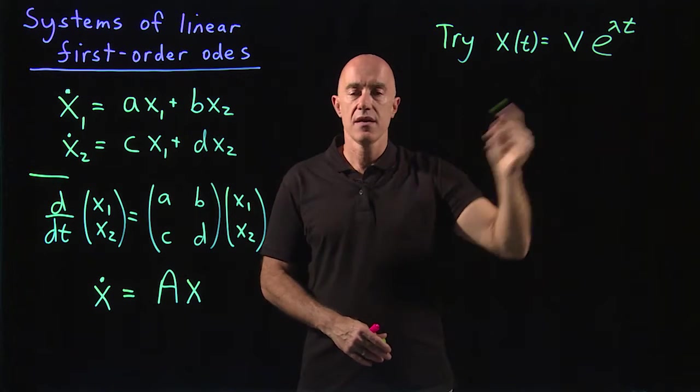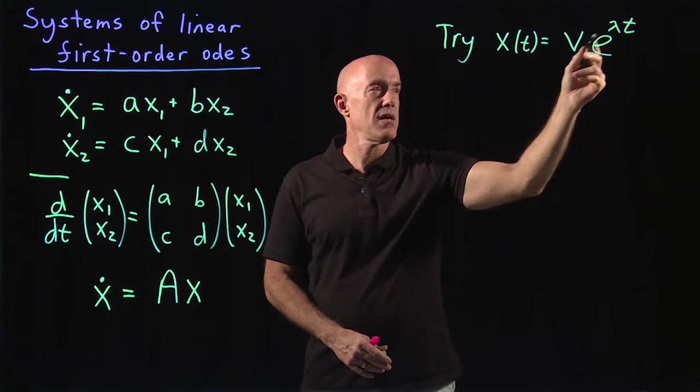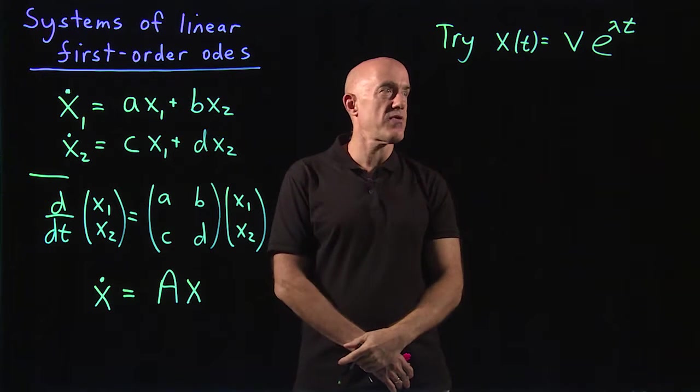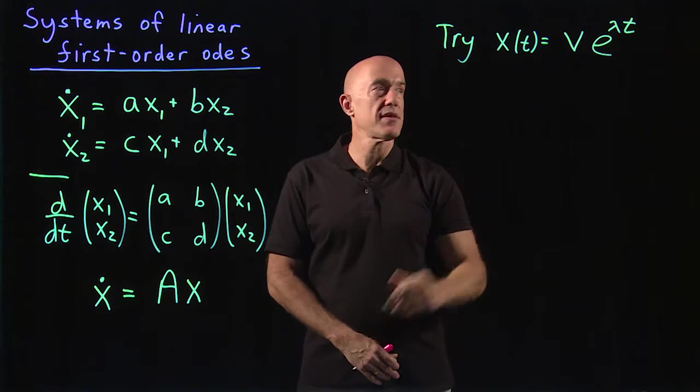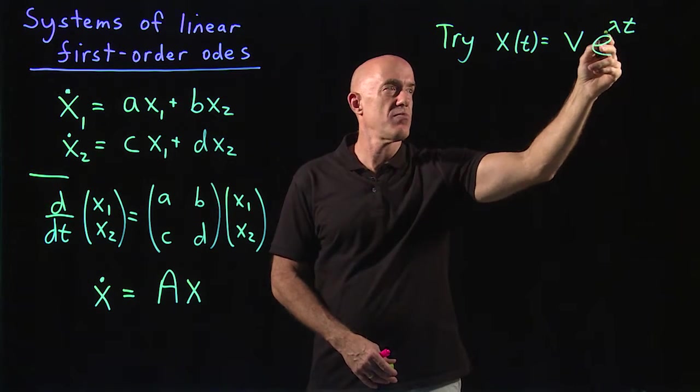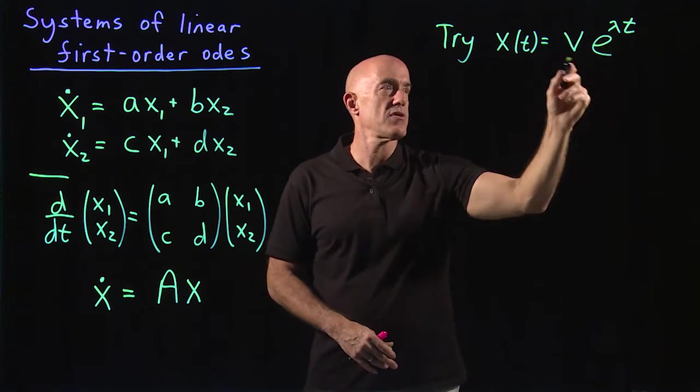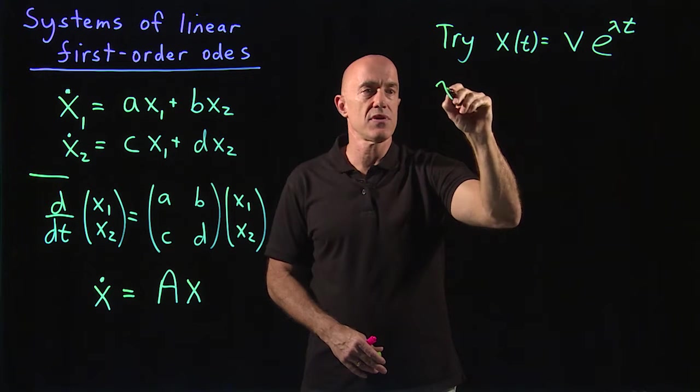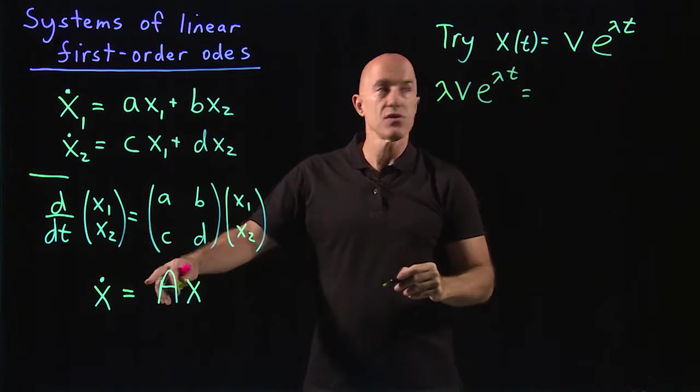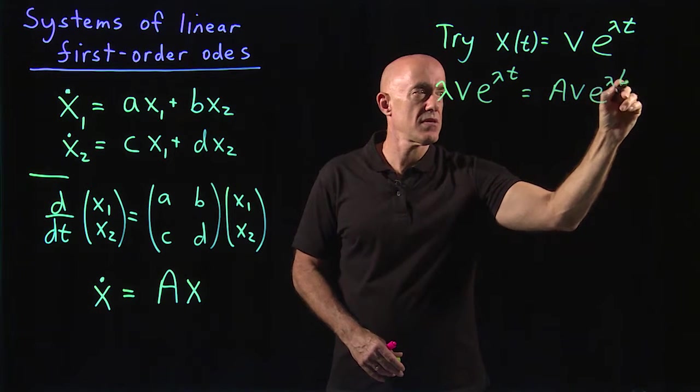And then we're looking for, in this type of ansatz, we're looking to determine both lambda and v. What happens when we substitute into the differential equation? The time derivative, v is independent of time, the time derivative will bring down a lambda. Lambda is also independent of time. So substituting into the differential equation, we'll get lambda v times e to the lambda t is equal to A times v times e to the lambda t.